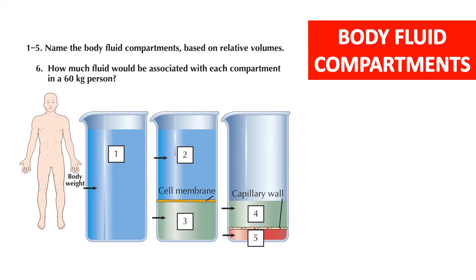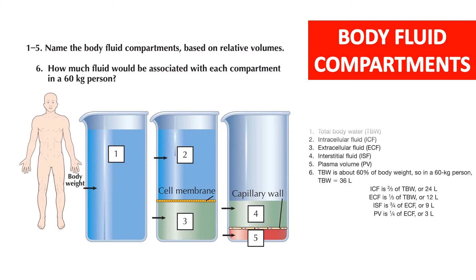The next question is related to body fluid compartments. Name the fluid compartments based on relative volumes and how much fluid will be associated with each compartment in a 60 kg person. Number 1 represents total body water, number 2 is intracellular fluid (ICF), number 3 is extracellular fluid (ECF), number 4 is interstitial fluid, and number 5 is plasma volume. Total body water is about 60% of body weight, so in a 60 kg person it will be 36 liters. Two-thirds of total body water makes up intracellular fluid, so it will be 24 liters.